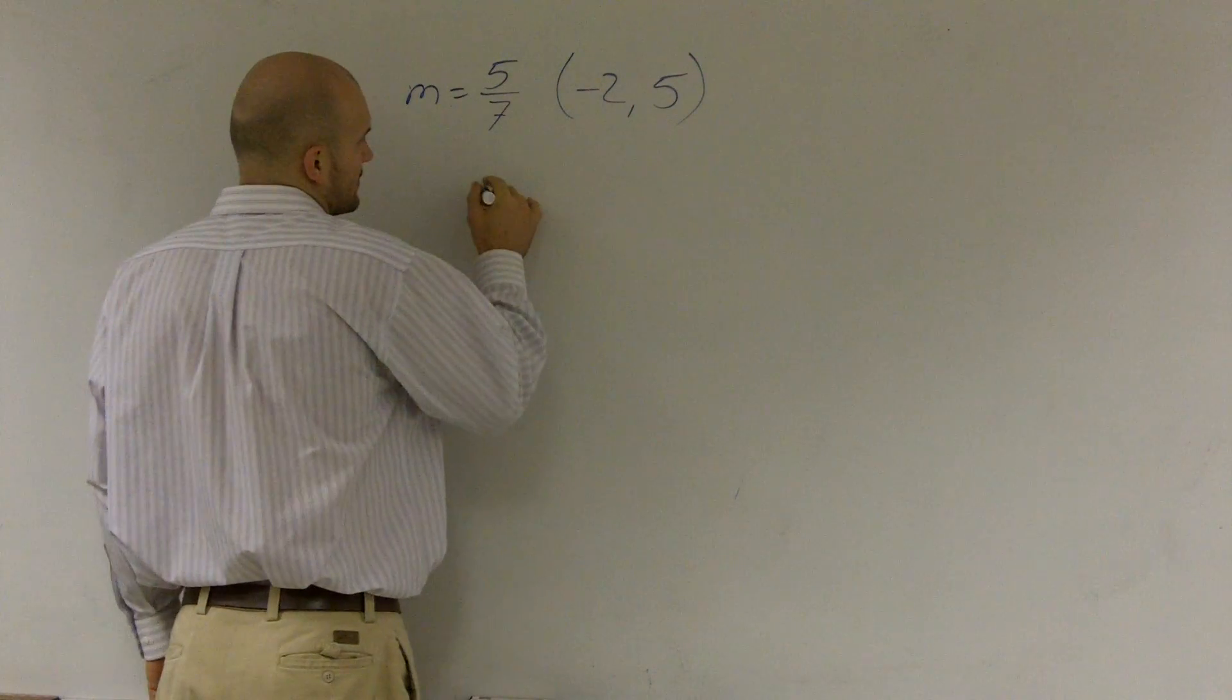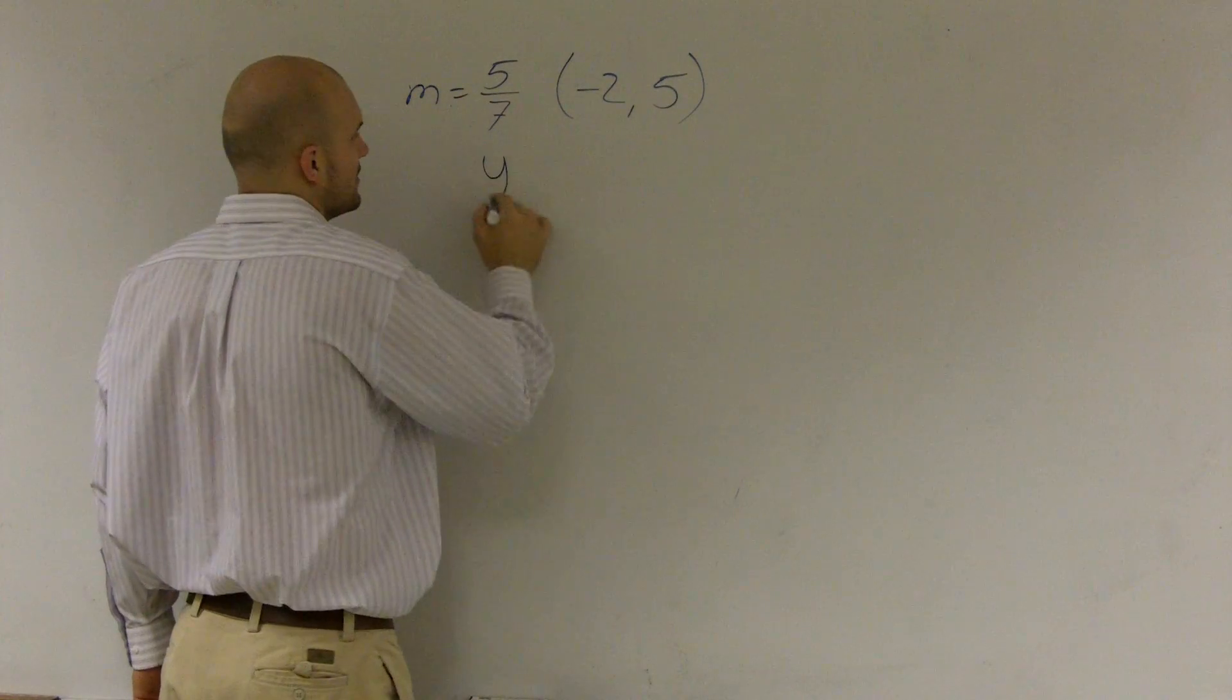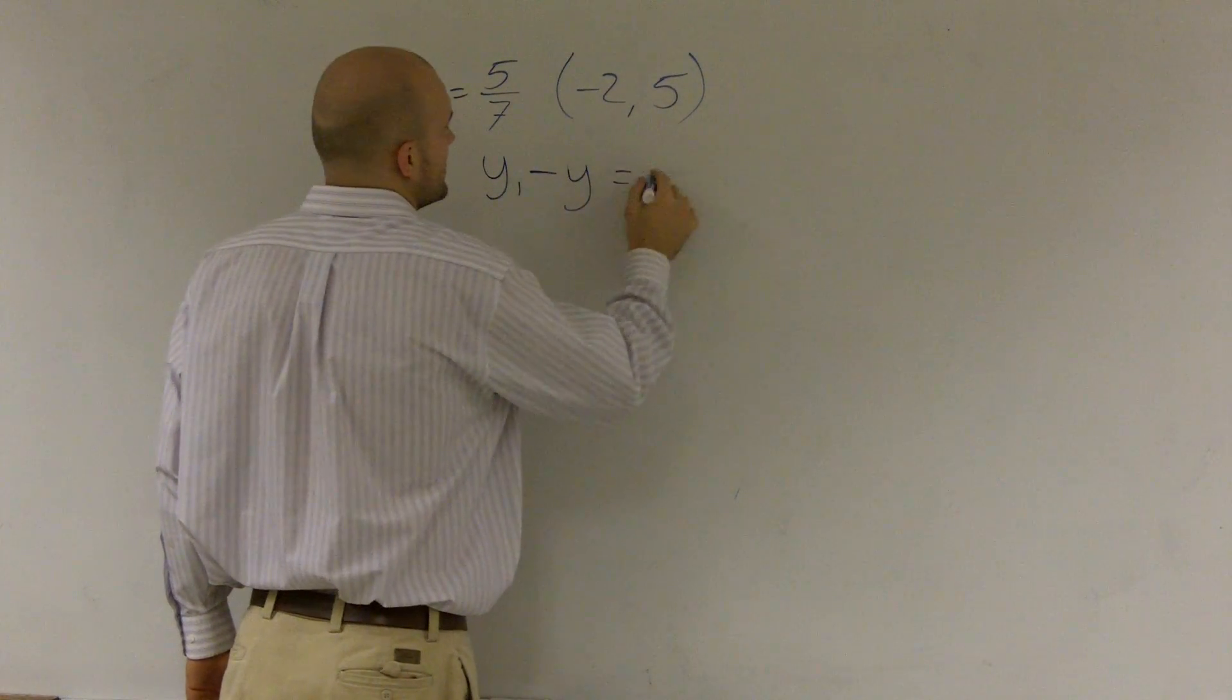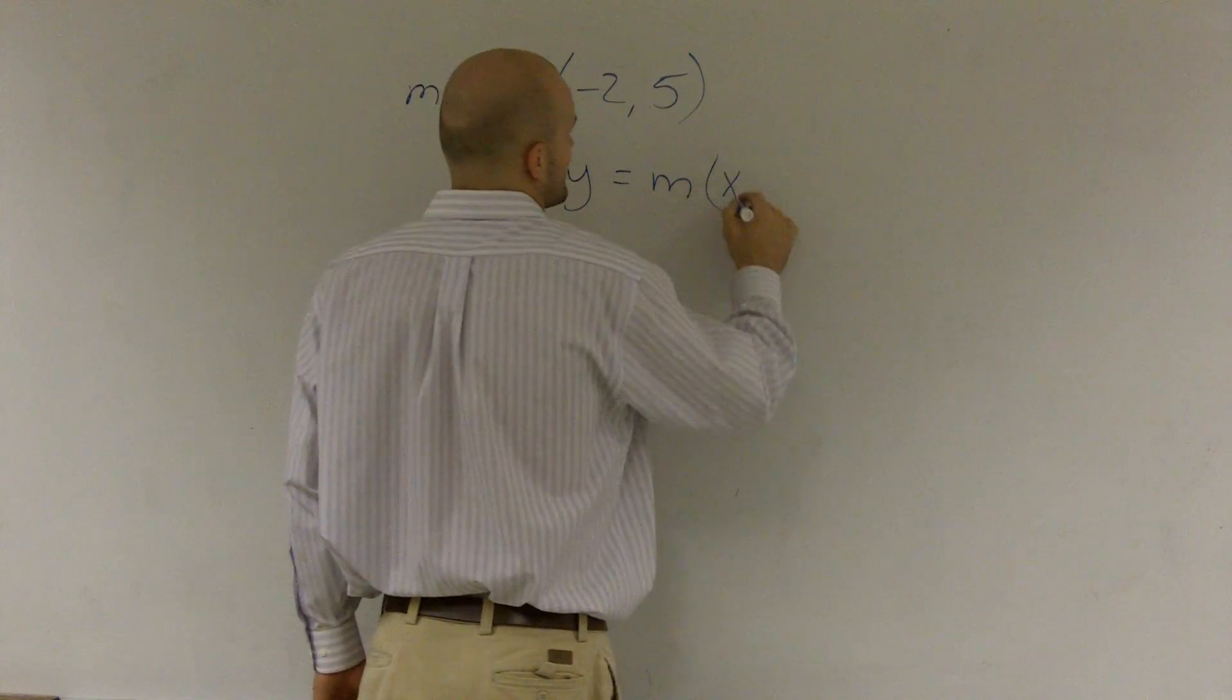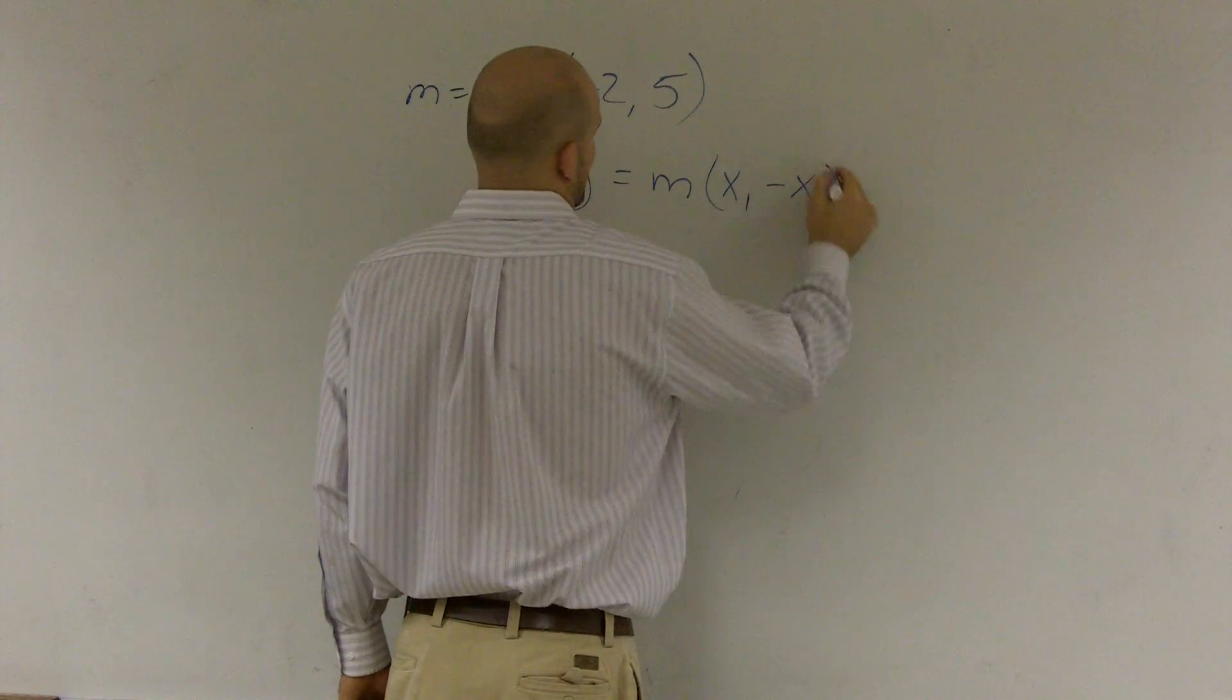So let's see here. There's a lot of different formations of point-slope form, but I'm just going to write this one. y minus y1 equals m times x minus x1. OK?